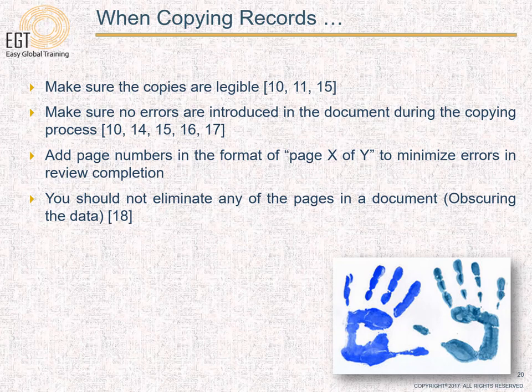When copying records, make sure copies are legible and no errors are introduced in the process. Add page numbers in the format of 'page X of Y' to minimize errors in review completion. Never eliminate any pages from the document, as this can be inferred as obscuring the data, which is not allowed per GDP.